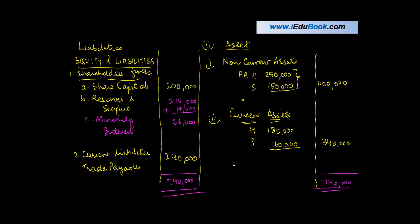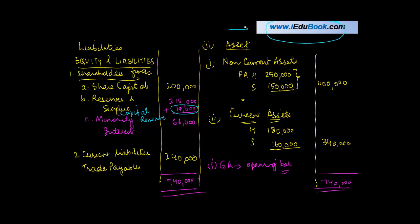The two key learnings from this exercise: first, if only the general reserve closing balance is given and nothing is mentioned about the opening balance, we assume it is entirely the opening balance and hence entirely a capital reserve. Second, when cost of control is negative, it represents a capital reserve — in this case Rs. 19,000.